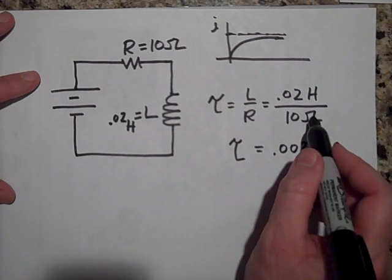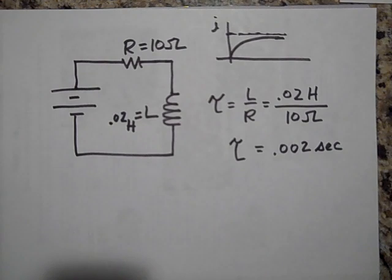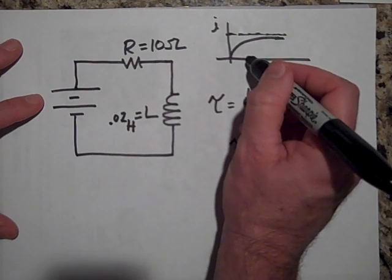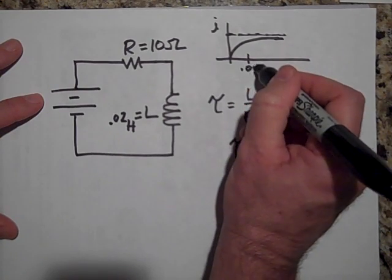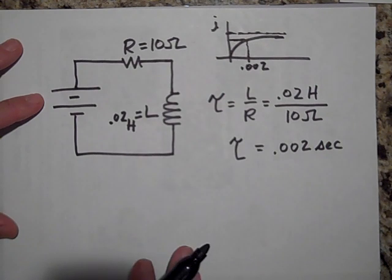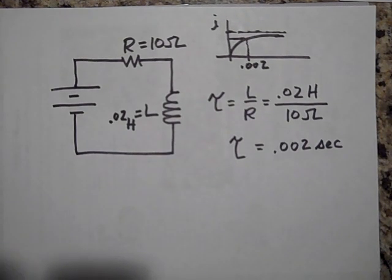There's a homework problem that will ask you to convert henrys over ohms to seconds—see if you can do that. But after 0.002 seconds it will be at two-thirds of its value. So just go down 0.002 seconds and it will be about two-thirds of its value. Okay, so that's what the time constant is all about. All right, we'll see you in the next video. Bye.